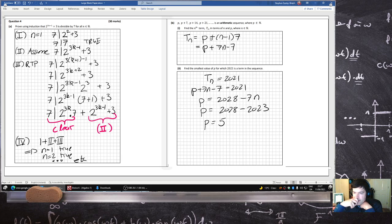5. That's the smallest I can make p. And then the 289th term, which is irrelevant, will be 2021.